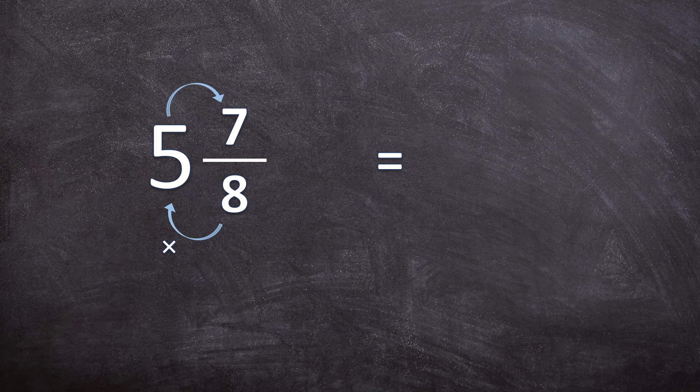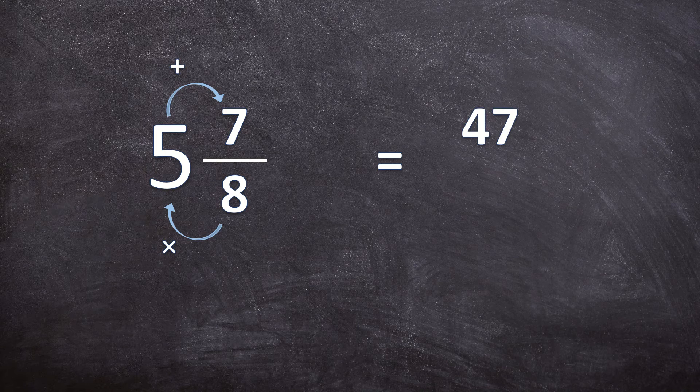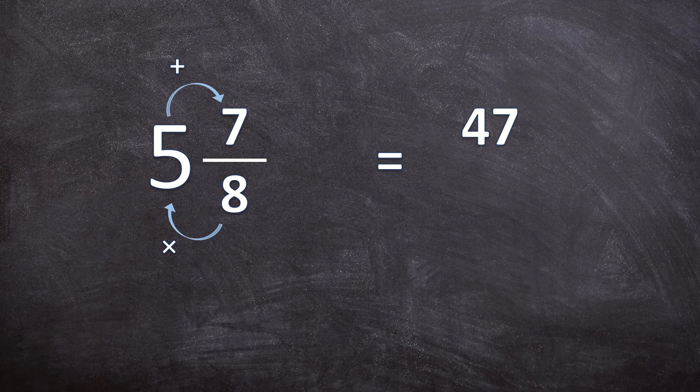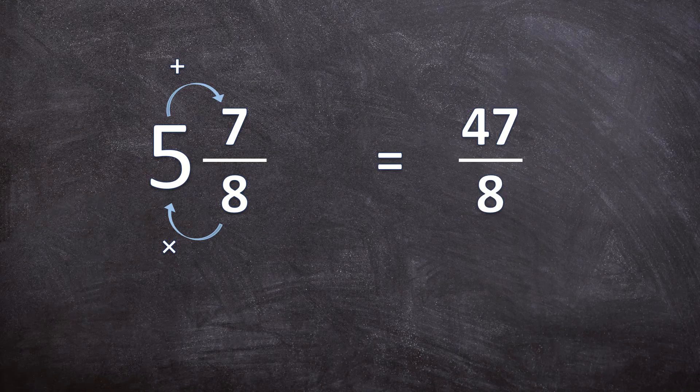Now we add the numerator. 40 plus seven is 47. So the numerator is going to be 47 over, our denominator stays the same.